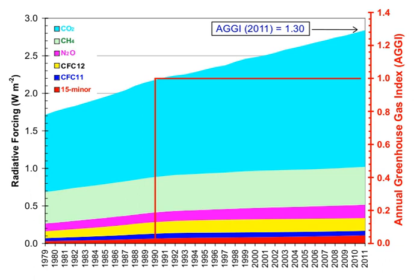The global warming potential (GWP) depends on both the efficiency of the molecule as a greenhouse gas and its atmospheric lifetime. GWP is measured relative to the same mass of CO2 and evaluated for a specific timescale. Thus, if a gas has a high radiative forcing but also a short lifetime, it will have a large GWP on a 20-year scale but a small one on a 100-year scale. Carbon dioxide is defined to have a GWP of 1 over all time periods.